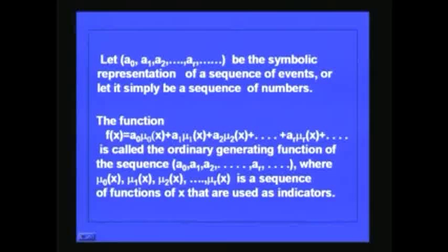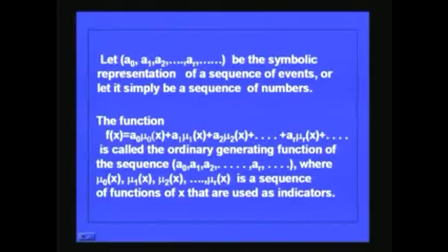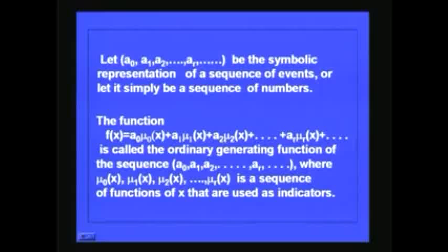In general, let A₀, A₁, A₂, ..., Aᵣ be the symbolic representation of a sequence of events, or simply a sequence of numbers. Then the function F(x) = A₀·μ₀(x) + A₁·μ₁(x) + A₂·μ₂(x) + ... + Aᵣ·μᵣ(x) is called the ordinary generating function of the sequence A₀, A₁, A₂, ..., Aᵣ, where μ₀(x), μ₁(x), μ₂(x), ..., μᵣ(x) is a sequence of functions of x used as indicator functions.